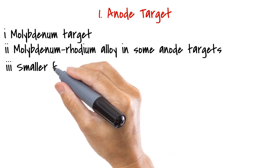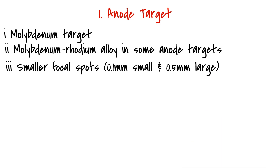Lastly, mammography anode targets also differ from conventional targets in their focal spots. Mammography tubes have a significantly smaller focal spot for increased resolution — 0.5mm focal spots for regular use, and an even smaller 0.1mm focal spot for magnification images.